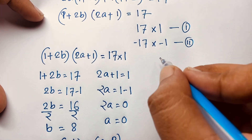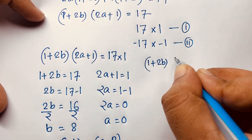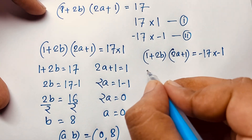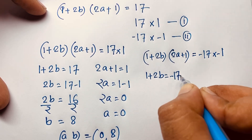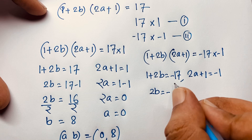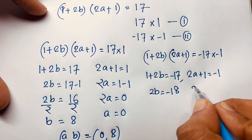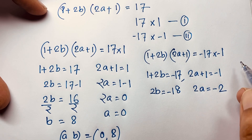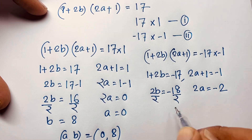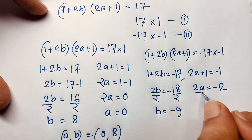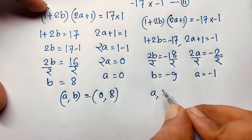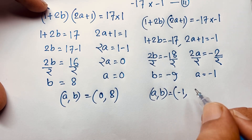In the other case: (1 plus 2B) times (2A plus 1) is equal to negative 17 times negative 1. So 1 plus 2B is equal to negative 17, giving 2B is equal to negative 18, so B is equal to negative 9. And 2A plus 1 is equal to negative 1, giving 2A is equal to negative 2, so A is equal to negative 1. We find A, B is equal to negative 1, negative 9.